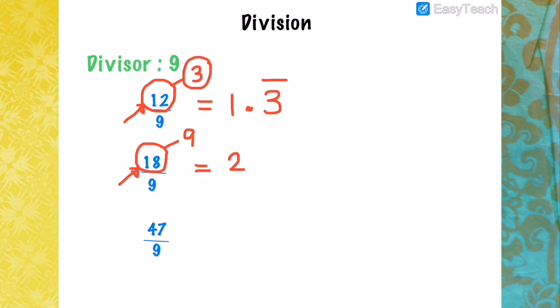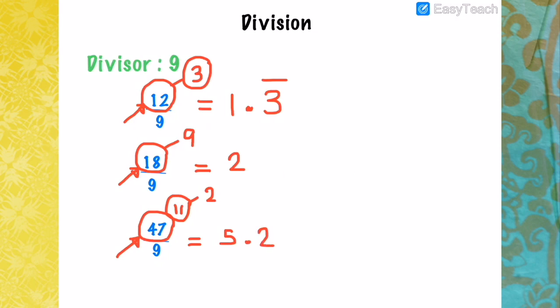Another example: 47 divided by 9. Add 4 and 7: 4 plus 7 is 11. Since 11 is still two digits, add again: 1 plus 1 is 2. Since the sum was more than 9, add 1 to the first digit: 4 plus 1 is 5. The decimal value is 2 (from 1 plus 1). Therefore 47 divided by 9 is 5.2 repeating.